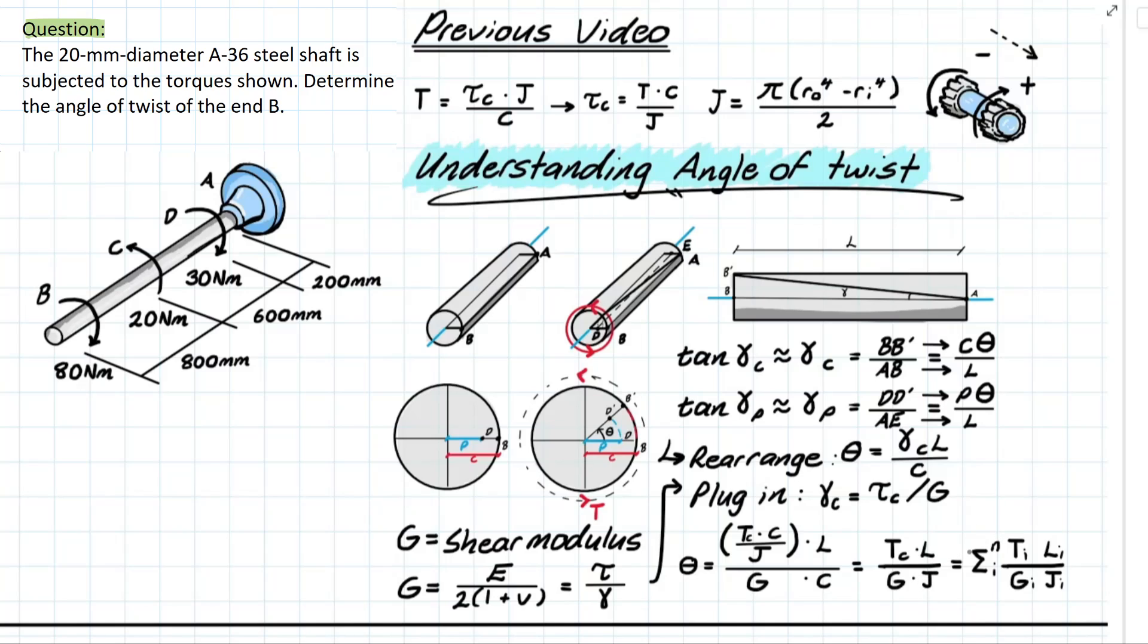And another interesting thing about this formula is that it's going to be cumulative. So as you have multiple torques applied at multiple lengths you have to consider each of them and how they affect your angle of twist at the final position that you're interested in.